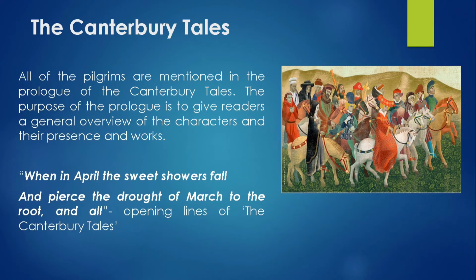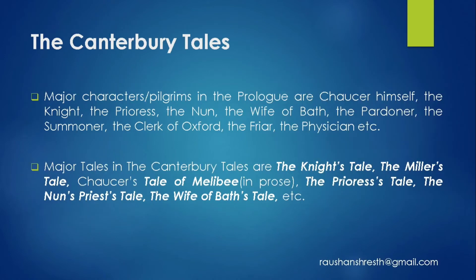There were 29 pilgrims in the Canterbury Tales, and all of them are discussed in the prologue. The opening line of the Canterbury Tales is: 'When in April the sweet showers fall and pierce the drought of March to the root and all.' Major characters and pilgrims mentioned in the prologue include Chaucer himself, the Knight, the Prioress, the Nun, the Wife of Bath, the Pardoner, the Summoner, the Clerk of Oxford, the Friar, and the Physician.